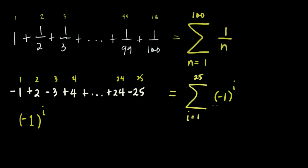Let's check by substitution. If I equals 1: negative 1 raised to 1 is negative 1, times 1, so it's negative 1. Correct. If I equals 2: negative 1 raised to 2 is positive 1, times 2, so it's positive 2. Correct. If I equals 3: negative 1 raised to 3 is negative 1, times 3, so we have negative 3. And this is your summation notation for this series.